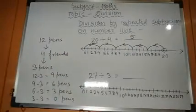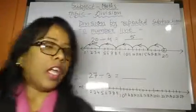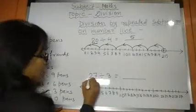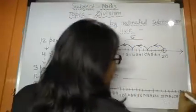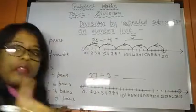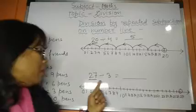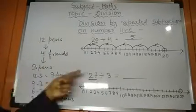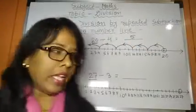Fine. Now, see the next example, 27 divided by 3. So, here 27 should be divided by 3. First of all, we will go to 27. You know that 27 is dividend. So, we will go to dividend on number line.